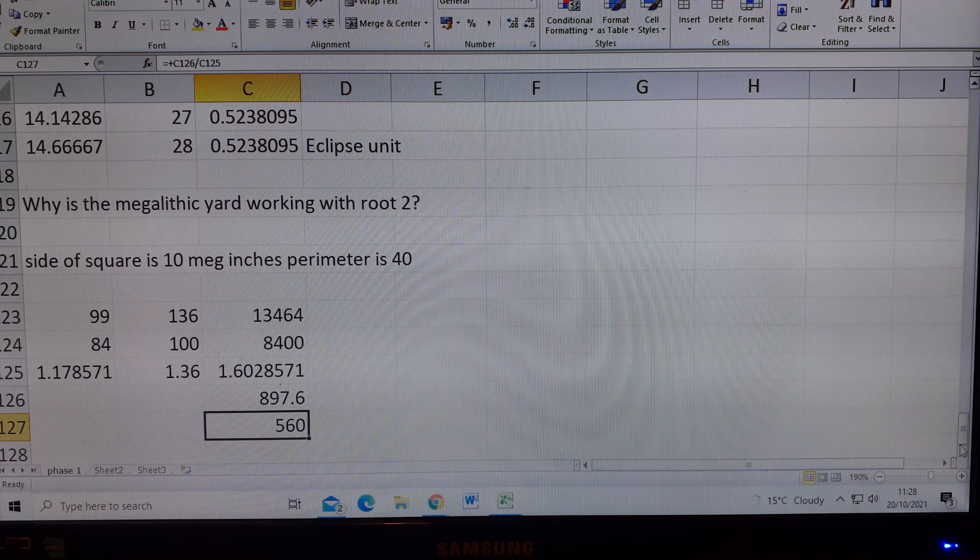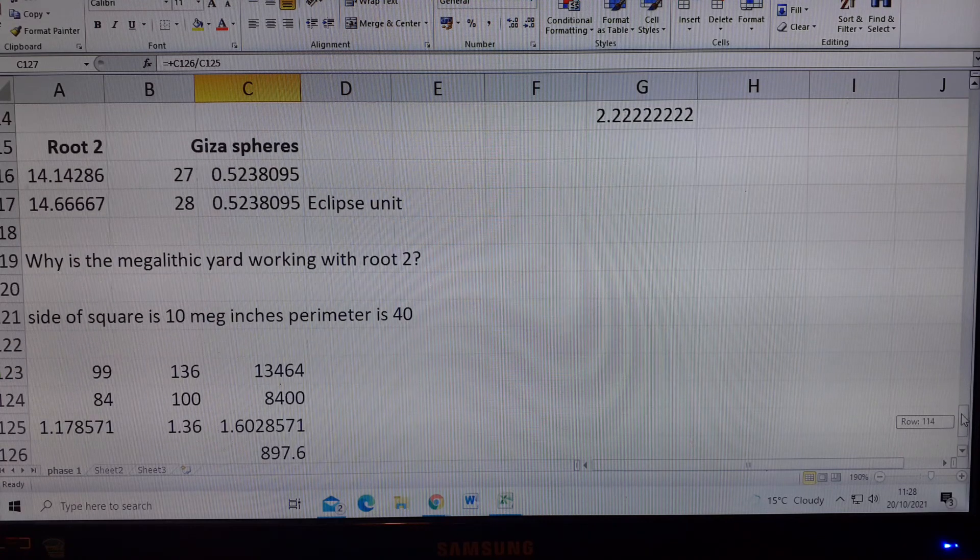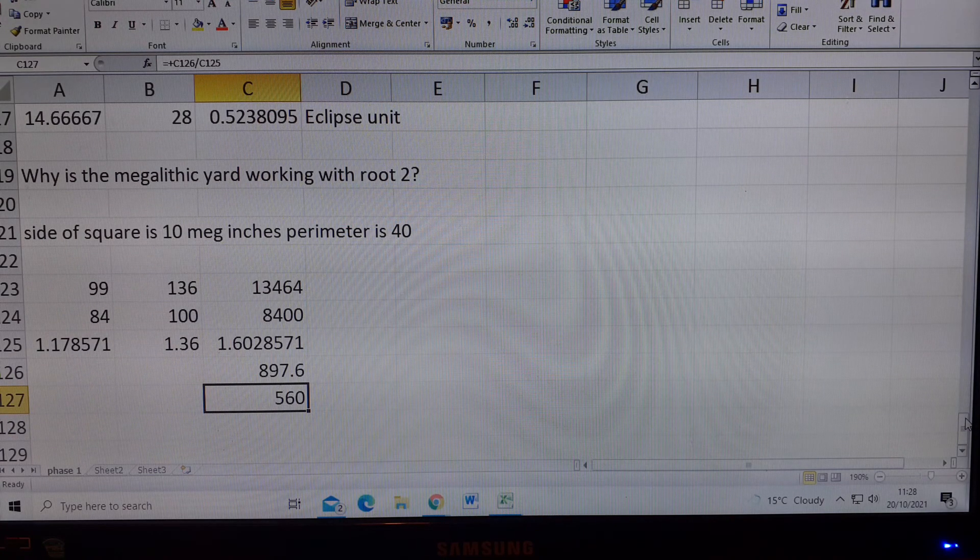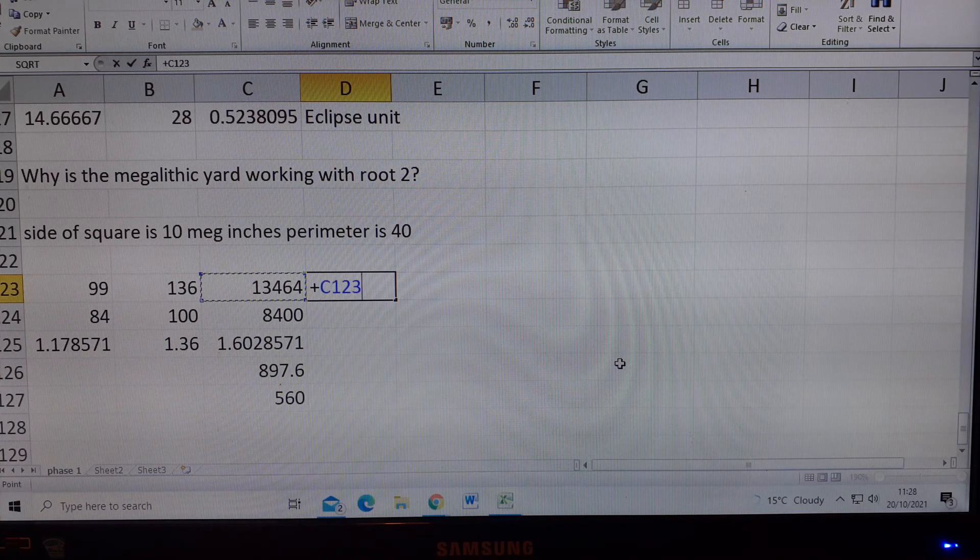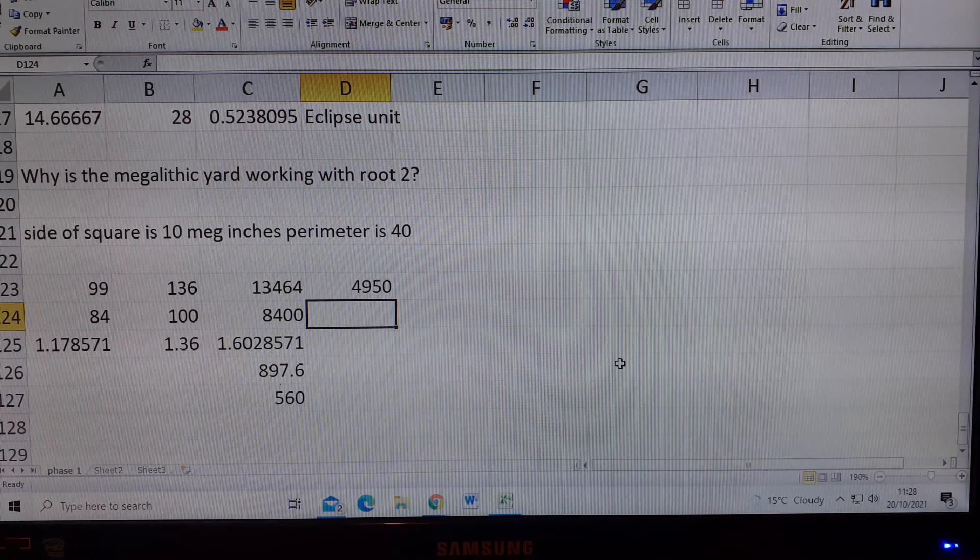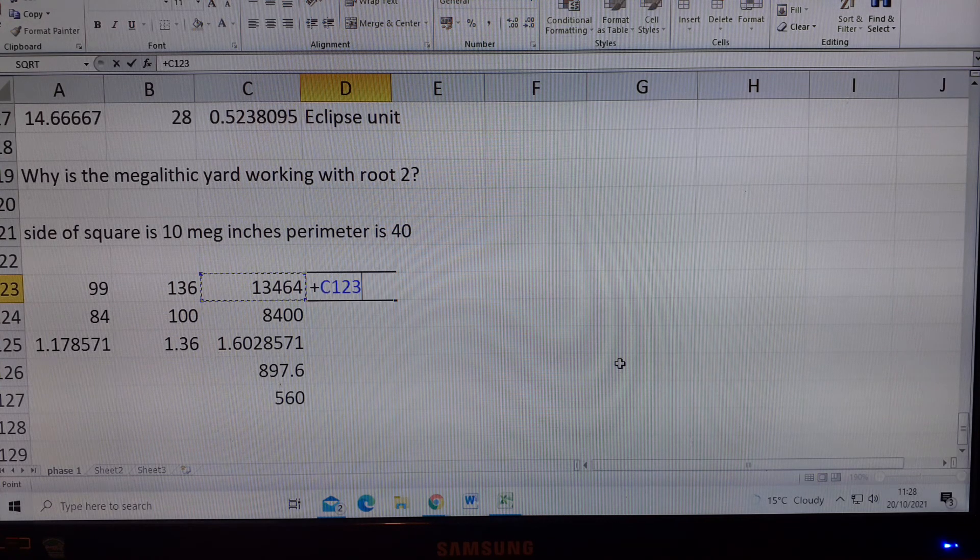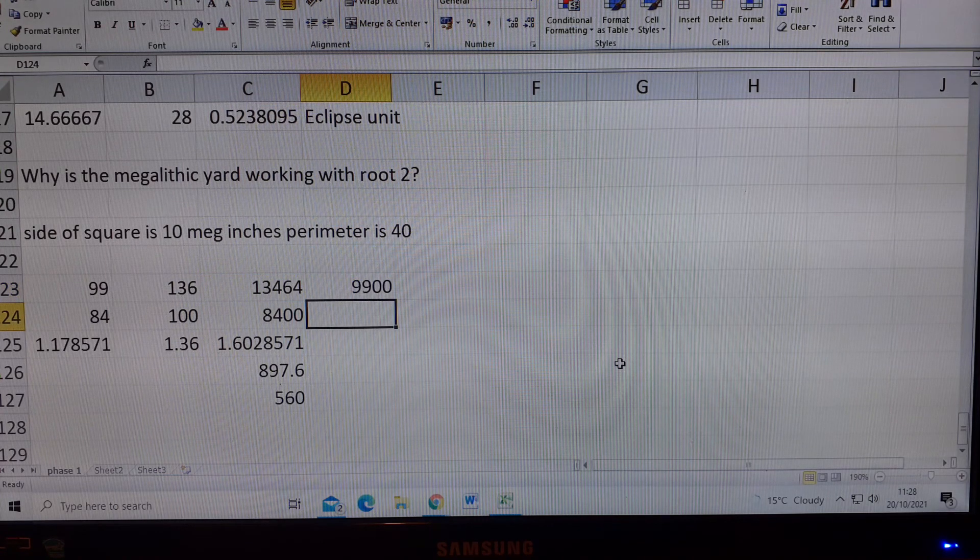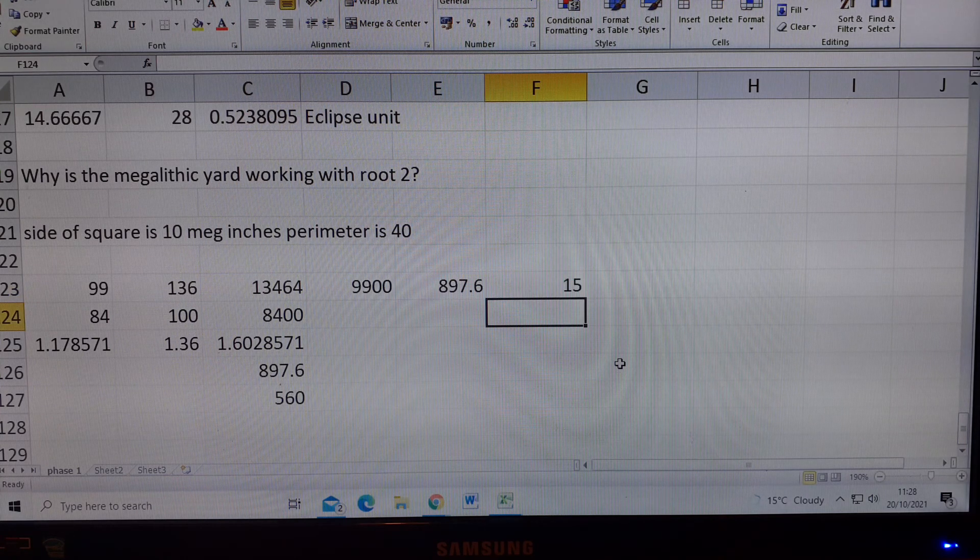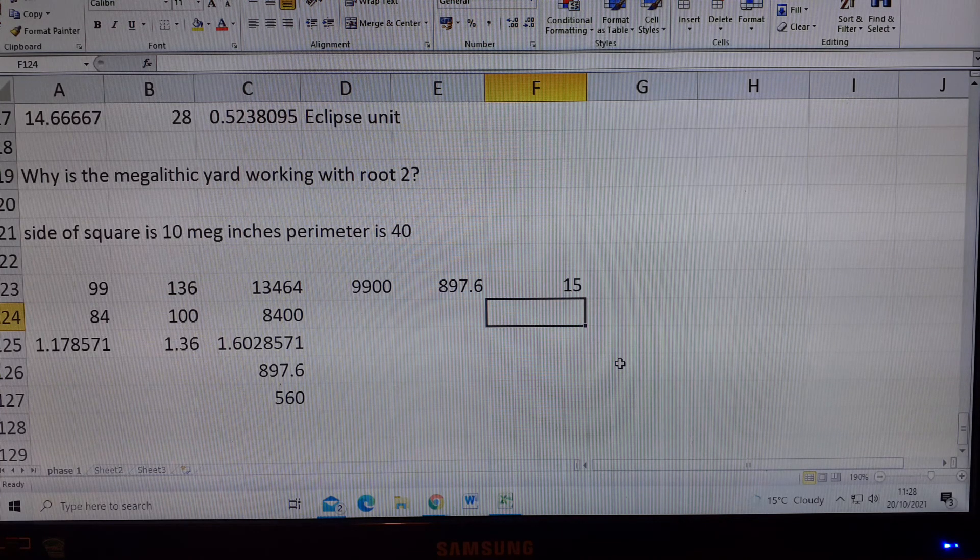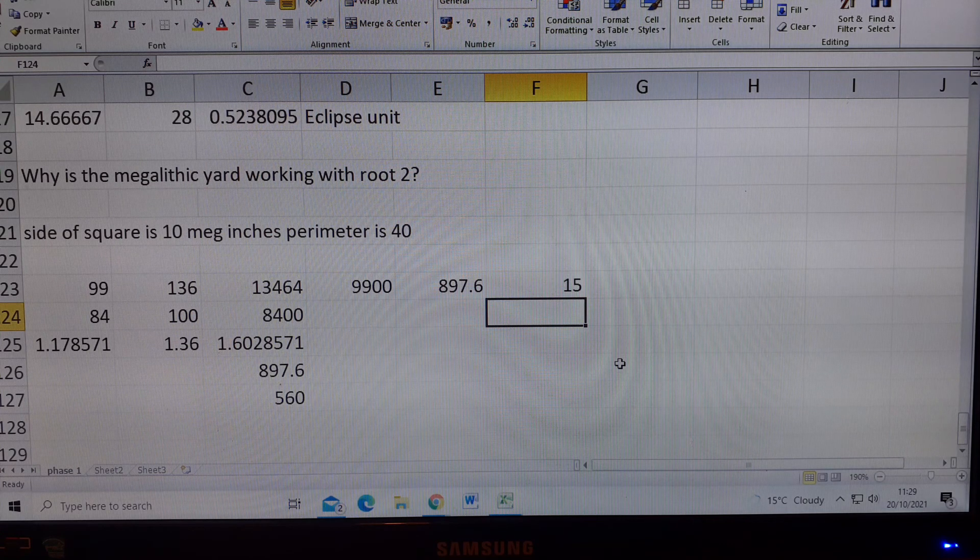So this is all stacking up to Berryman's historical metrology, as I found when I bought his book. My book about the Harrison Stockdale megalithic foot contains the same calculations as Berryman. This 1.3464, if we divide that, we get 4950 megalithic yards, and divide it by 1.36, we get 9900. If we divide it by 897.6, we get 15 Aubrey circles.